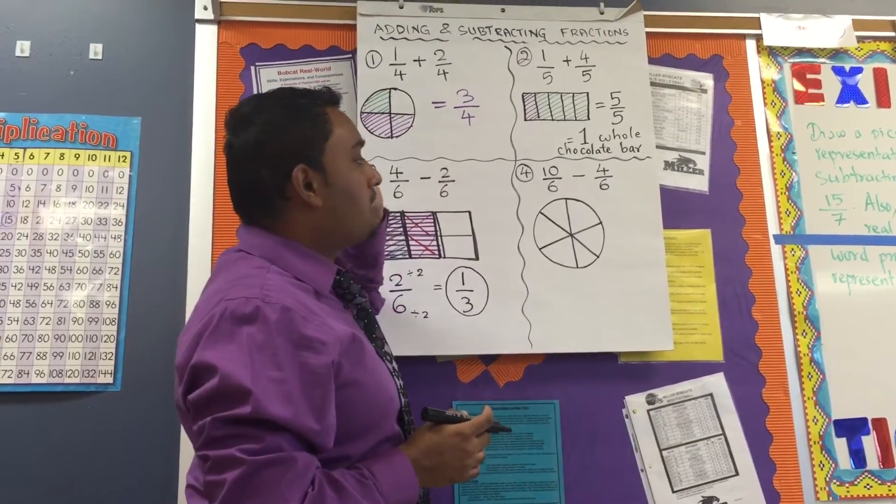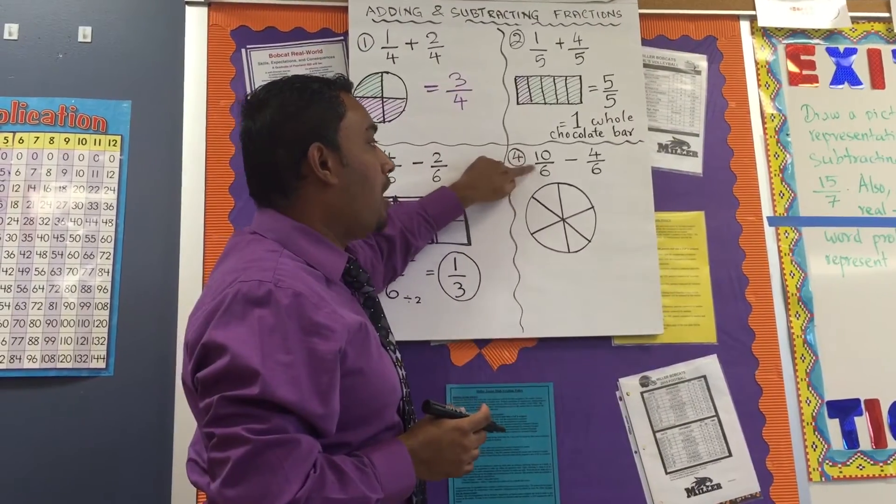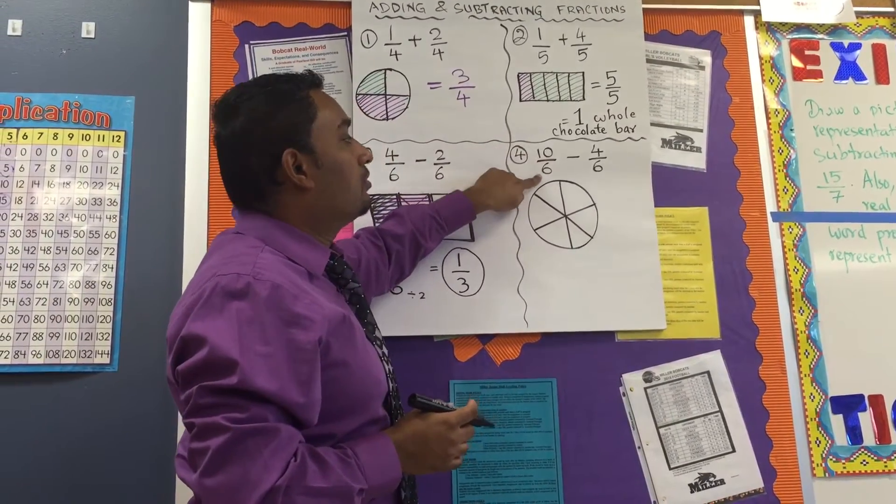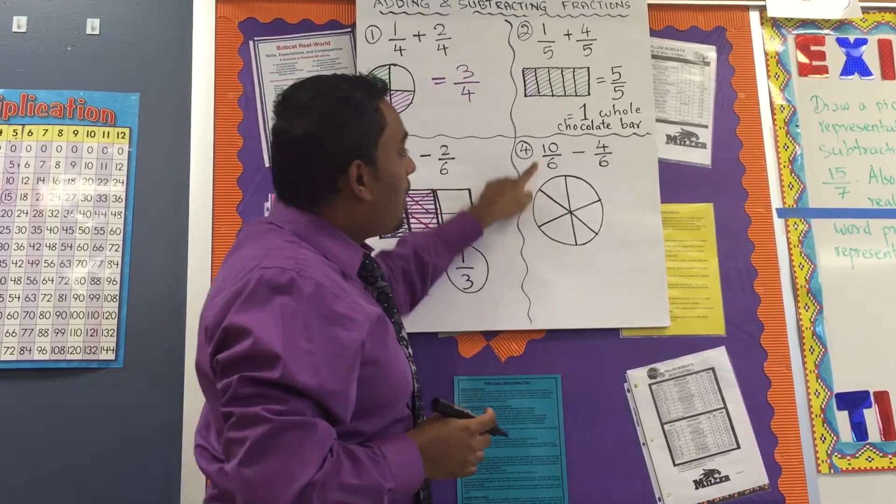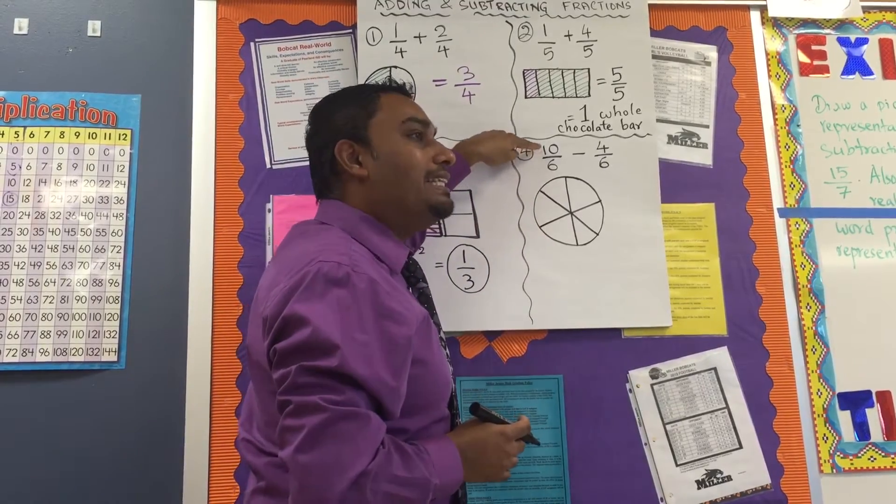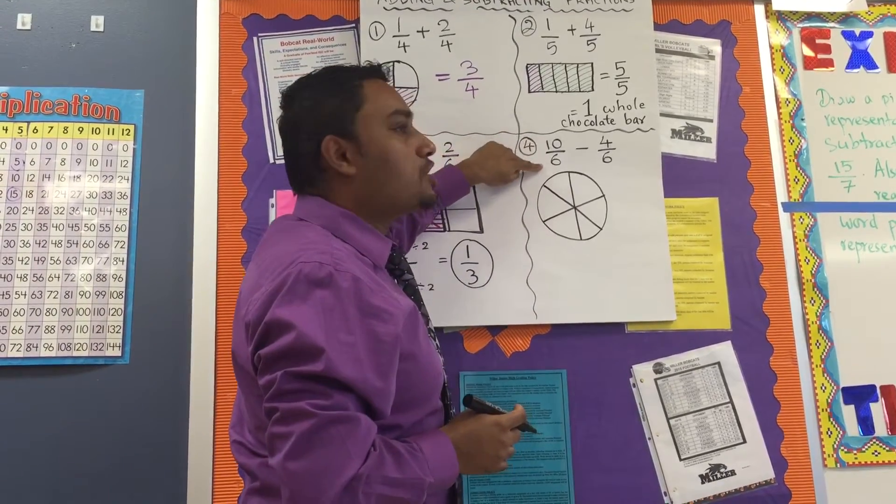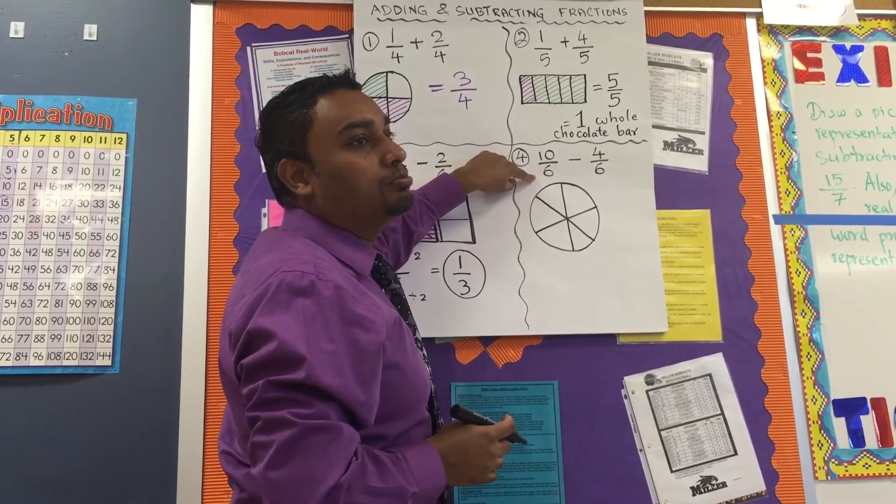Now, Cassie, how many equal parts should I divide it into? Six. Six equal parts. Now, I'm asking you, I want you to shade 10 parts out of 6 parts. Is that possible? No. No.